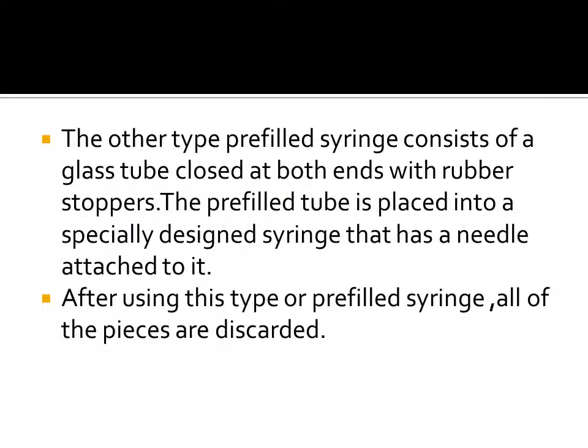Another type consists of a glass tube enclosed on both ends with rubber stoppers. The pre-filled tube is placed into a specially designed syringe that has a needle attached to it. After using this type of pre-filled syringe, all of the pieces are discarded. The two pre-filled syringe types are made of glass tube sealed with rubber stoppers.